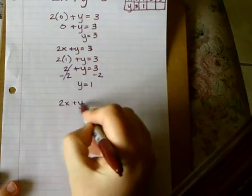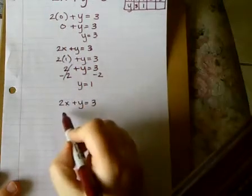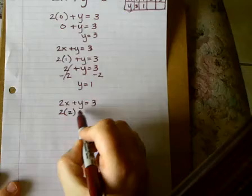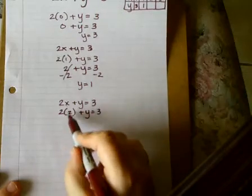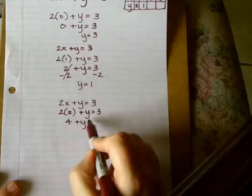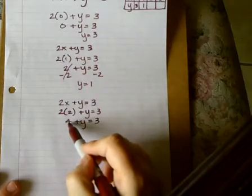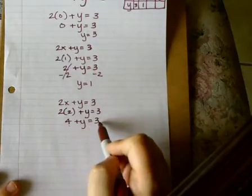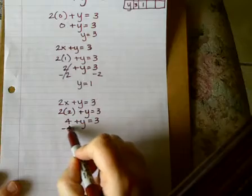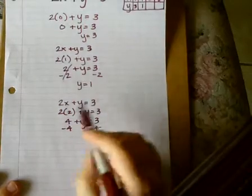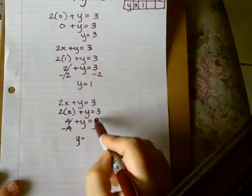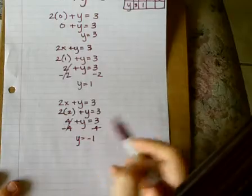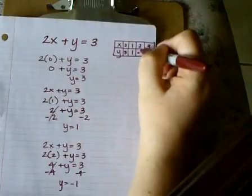2x plus y equals 3. This time I'm substituting a 2. 2 times 2 is 4, plus y equals 3. Since this is a positive 4, to move it to the other side of the equal sign, I must use its opposite, negative 4. It's canceled. 3 minus 4 is negative 1. Negative 1 in my chart.